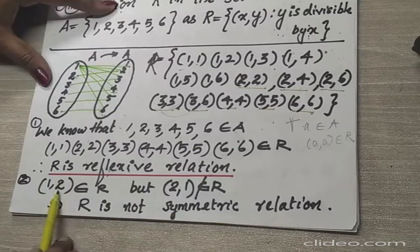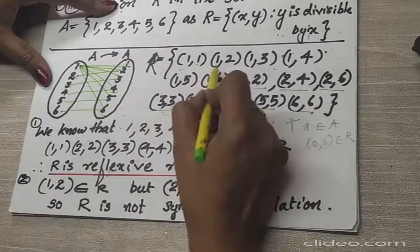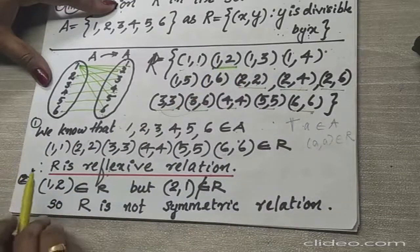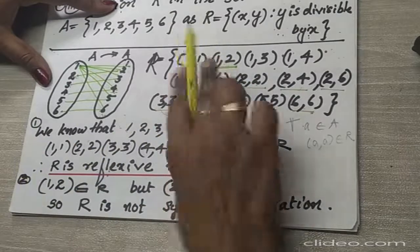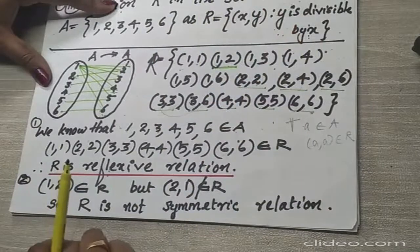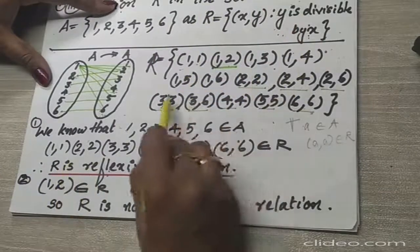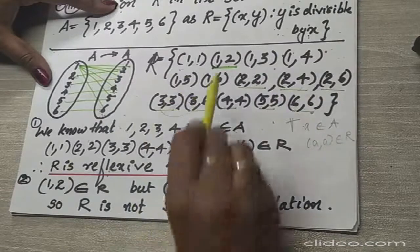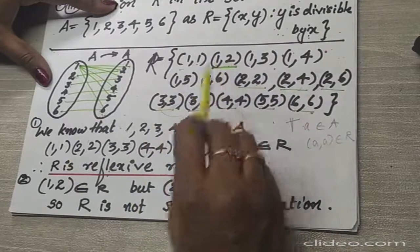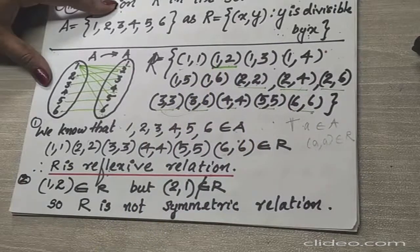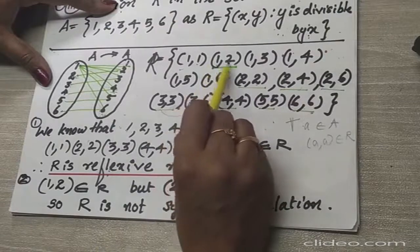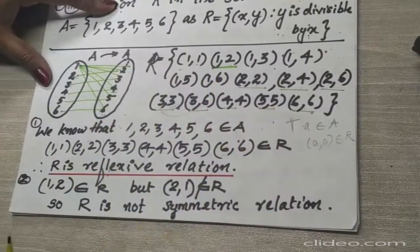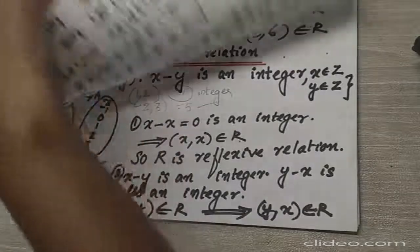Now we have to check whether it is symmetric or not. See, (1,2) belongs to the relation. If (1,2) belongs to the relation, then (2,1) should also belong to the relation. But you can see here, there is no (2,1). So we got one ordered pair which does not satisfy the condition — that is enough.